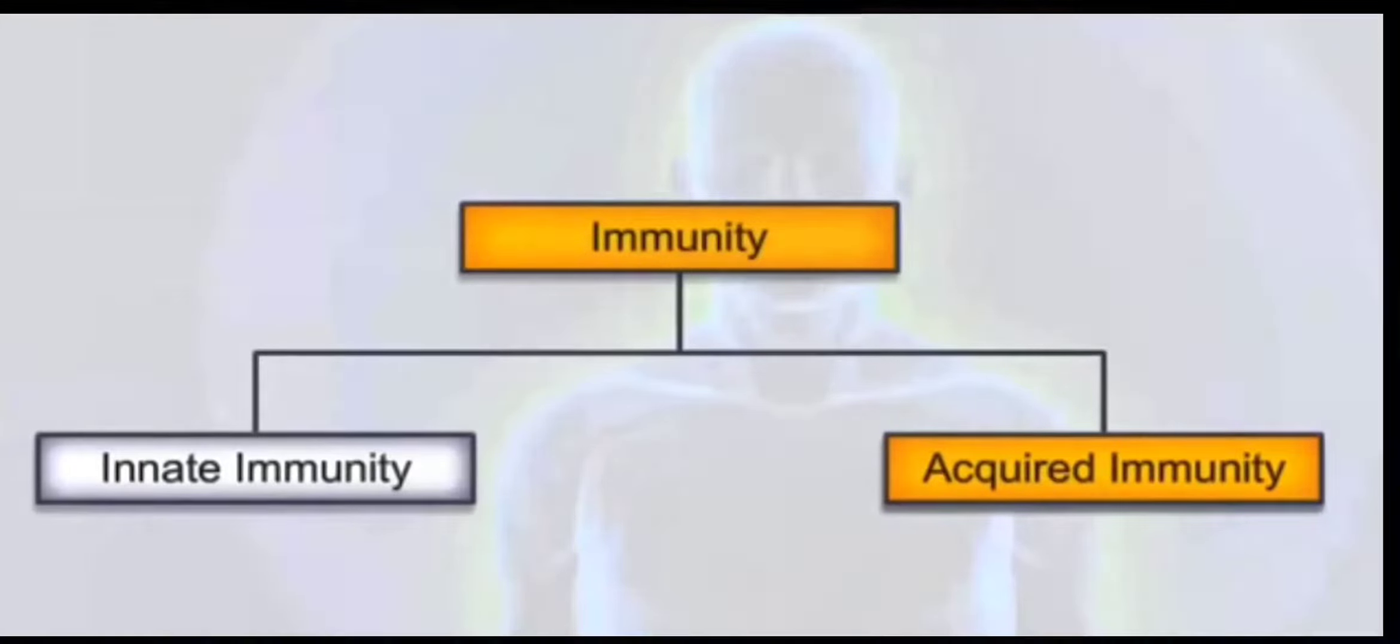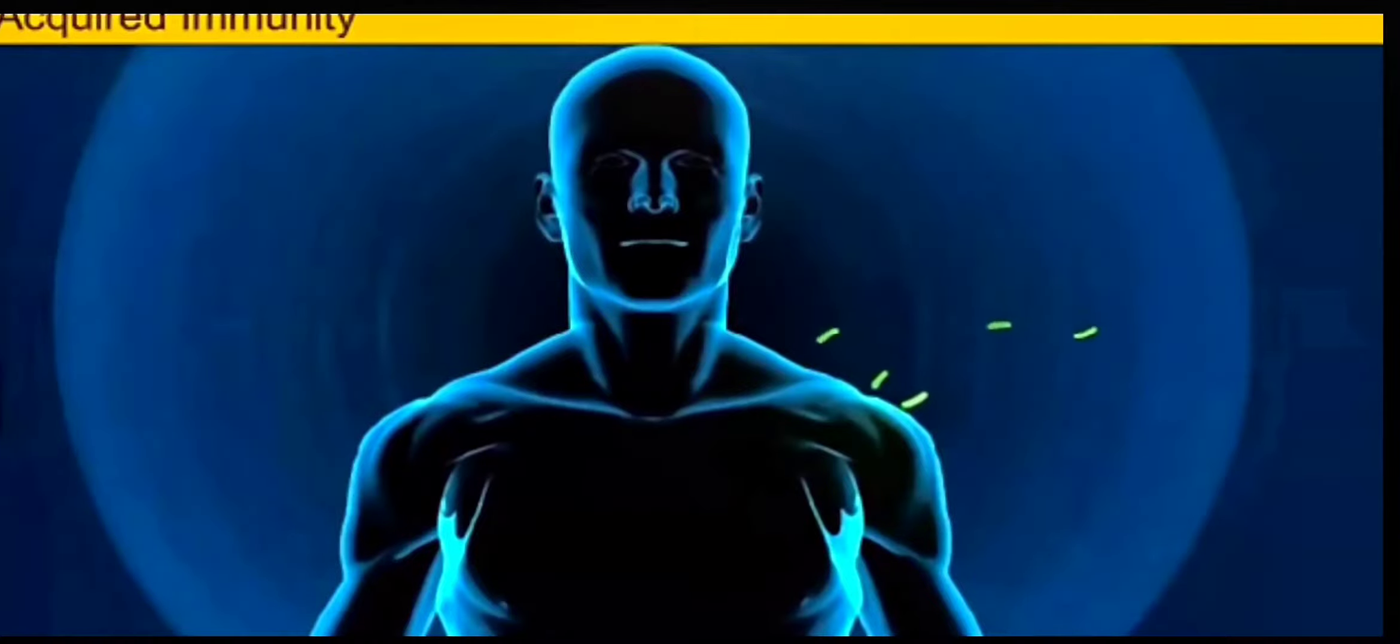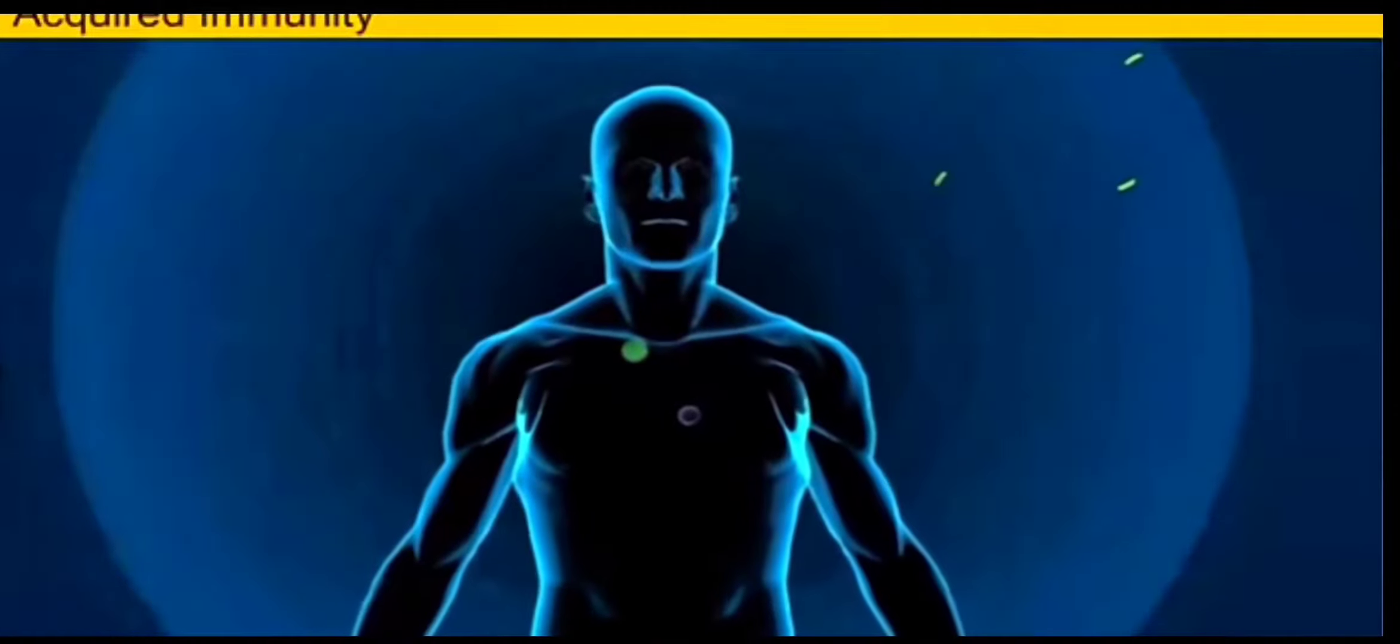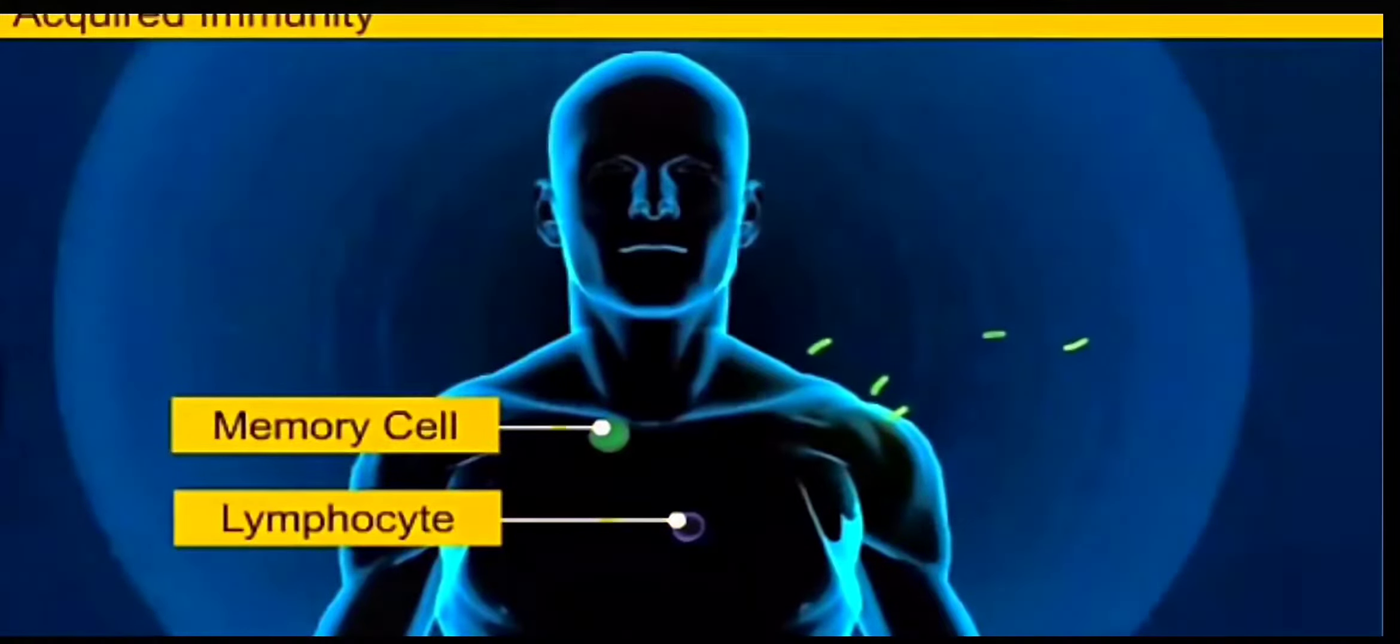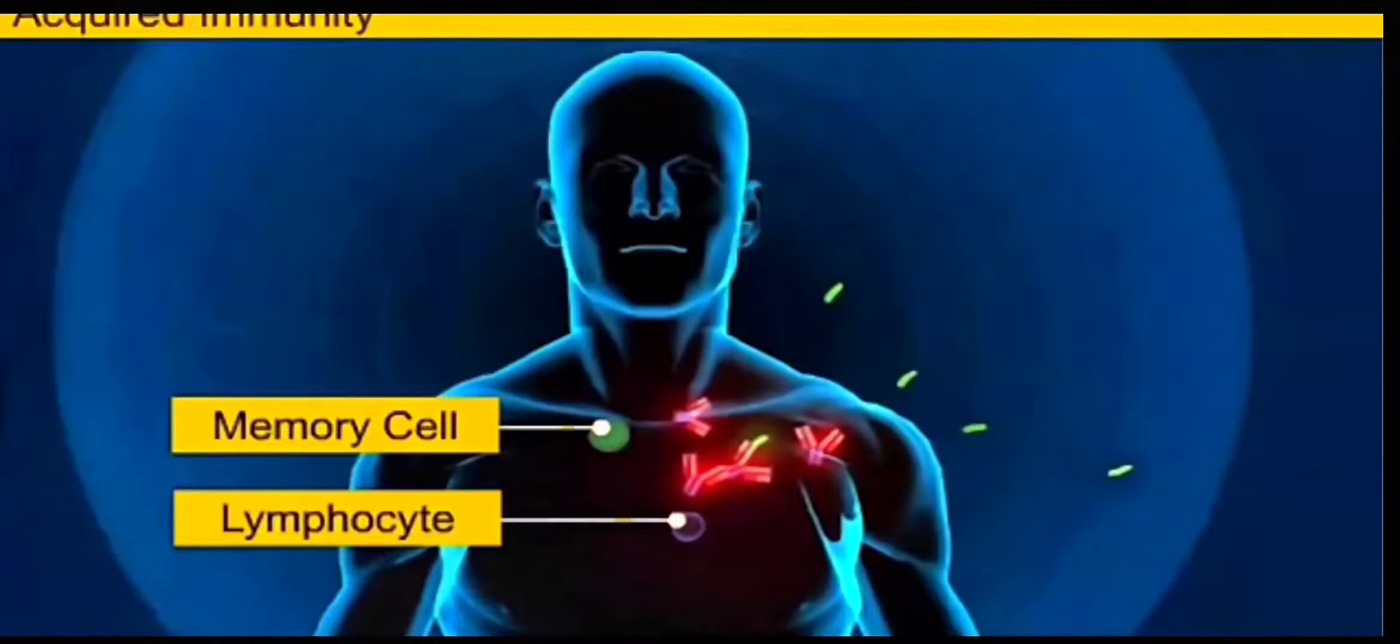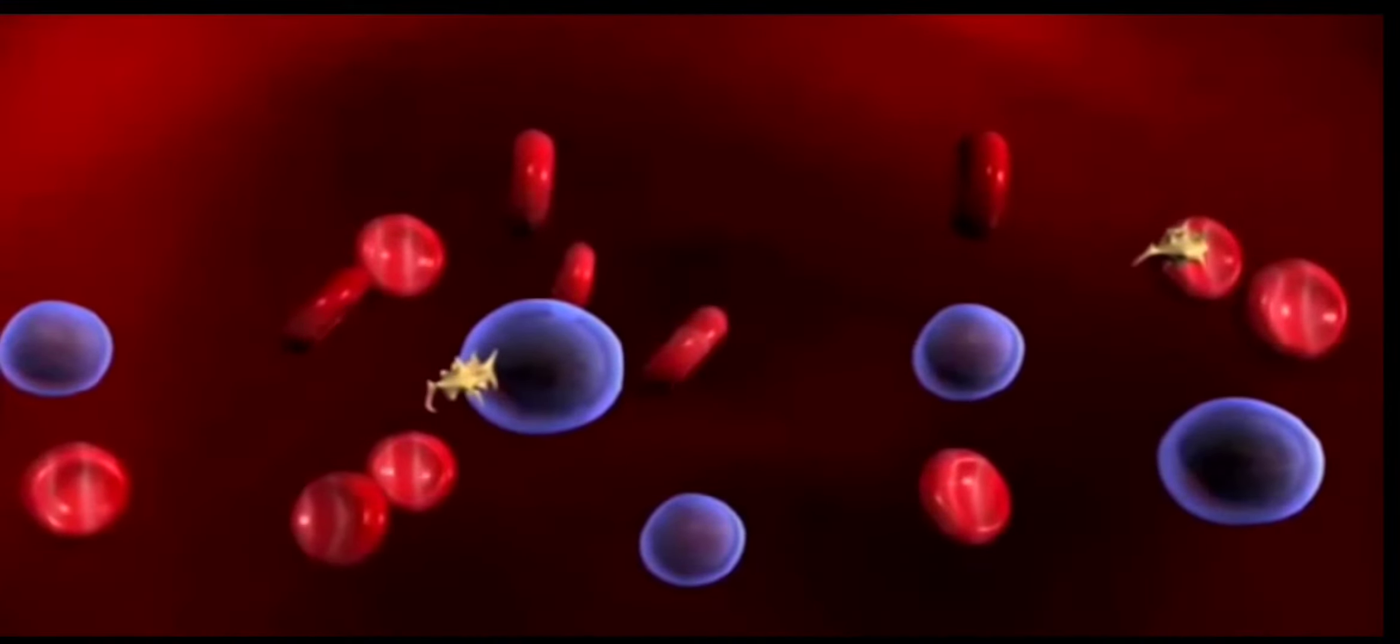Next comes the acquired immunity. Yes, this immunity we acquire after birth. In acquired immunity, our body produces certain chemicals which remain as memory cells in our body and prevent us from the pathogens. Initially, it is the primary immune response which produces memory cells, which is very mild. Later on comes the secondary immune response, which is also called an anamnestic response, which is very vigorous and kills the pathogen.